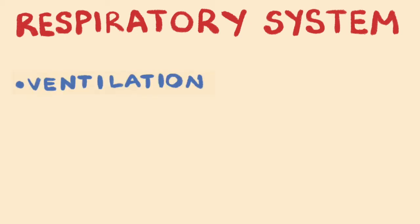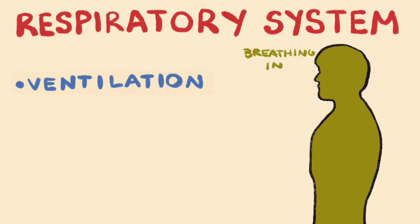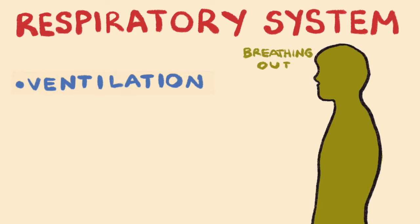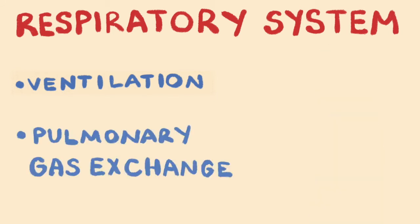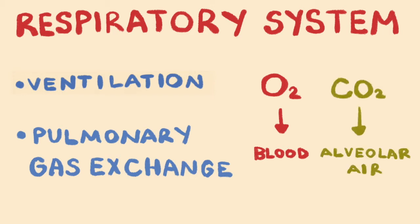On its own, the respiratory system works to perform two major processes. First, ventilation. Ventilation is breathing, or inhalation and exhalation. It can be defined as the mechanical flow of air into and out of the lungs. Second, the respiratory system performs pulmonary gas exchange. This is the simple diffusion of oxygen into the blood from the alveolar air and carbon dioxide diffusing from the blood into the alveolar air.